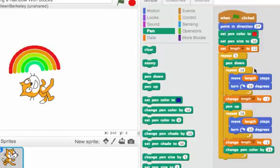I could make a block that draws a half circle and that might help make this code a little easier to understand. Let's look at that.